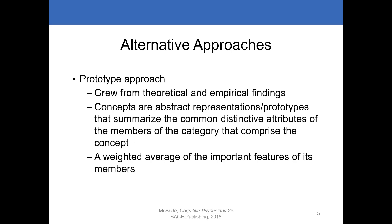The prototype approach — also referred to as the family resemblance or probabilistic approach — views concepts as abstract representations called prototypes that summarize the common and distinctive attributes of the members of a category. The prototype of a category is essentially a weighted average of important features of its members — features shared by the most common members and not by members of other categories. So there's what's common and what's distinctive. Categorical membership is determined by the similarity of an object's attributes to the prototype attributes. A prototype is the typical or common instance of a concept.